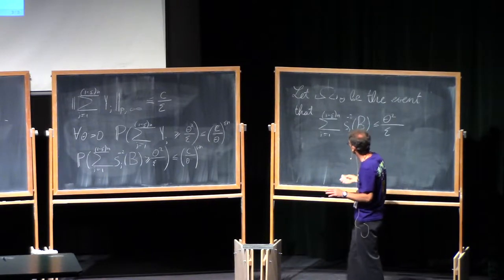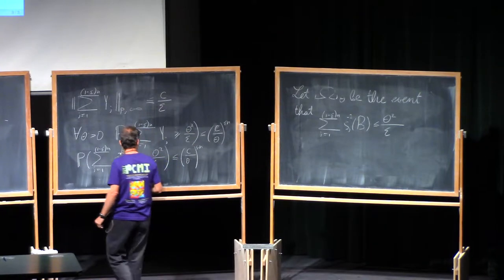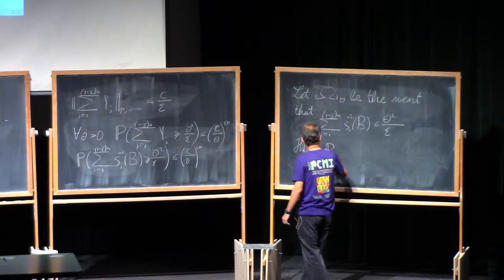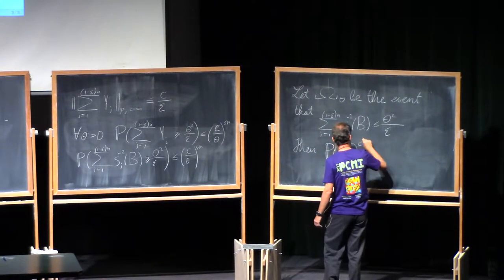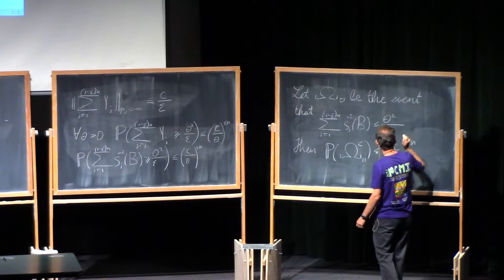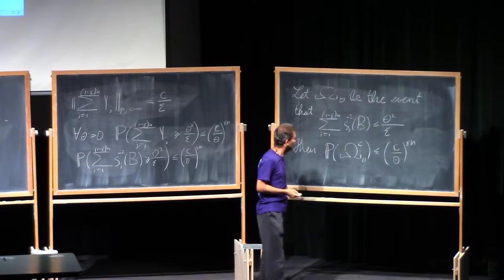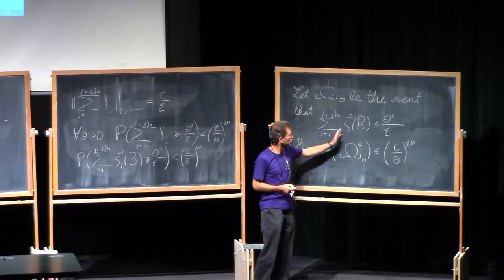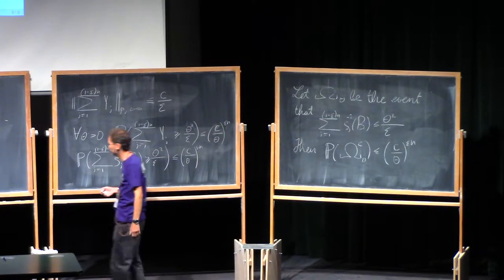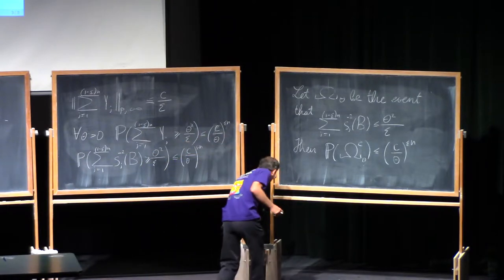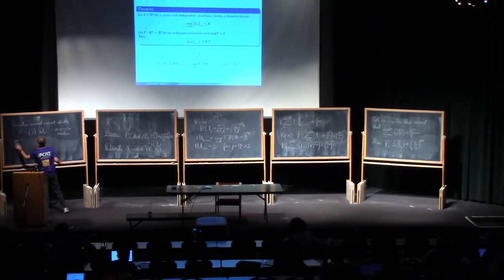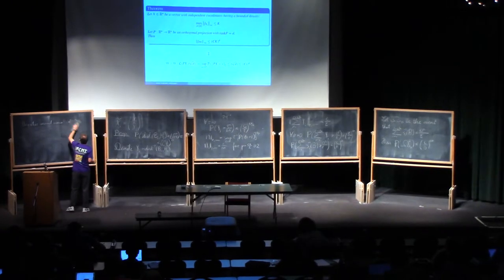We will choose theta in a moment. We know that the probability of omega_theta complement is less than or equal to c over theta to the epsilon. Assuming that this event occurs, not many singular values can be very small — we can use Markov's inequality. The negative second moment has played its role.